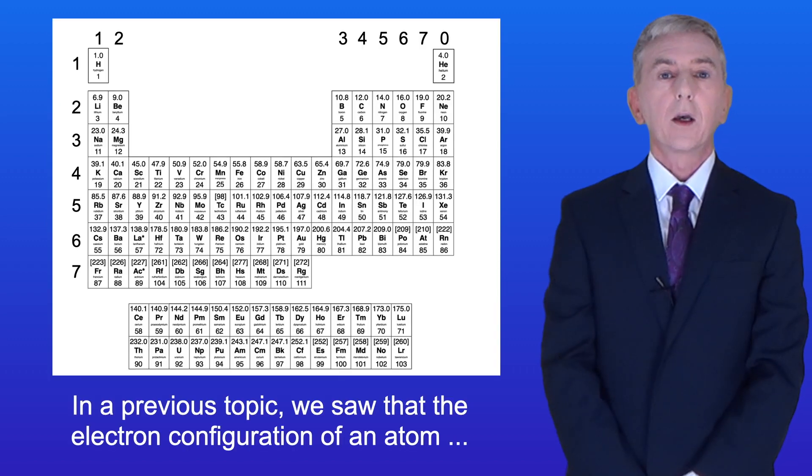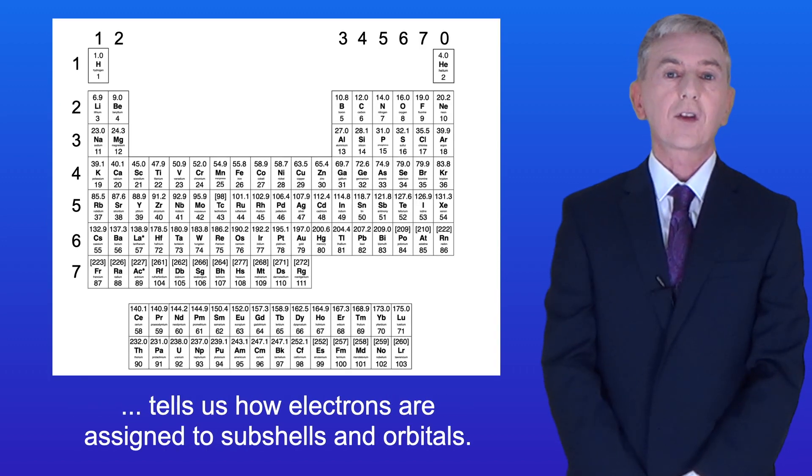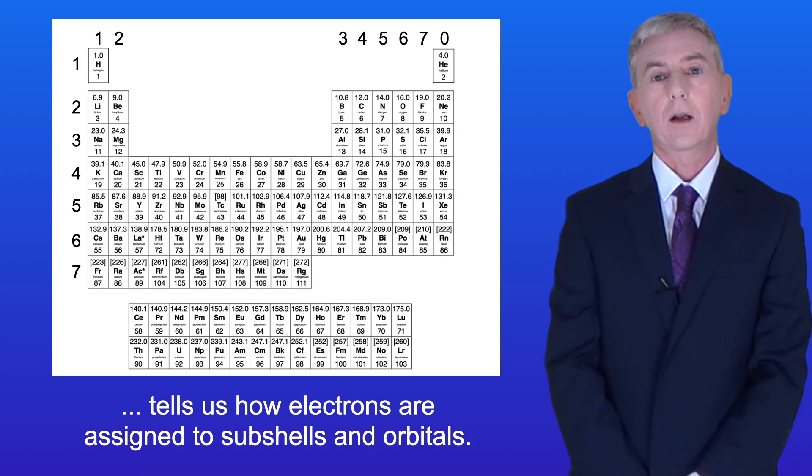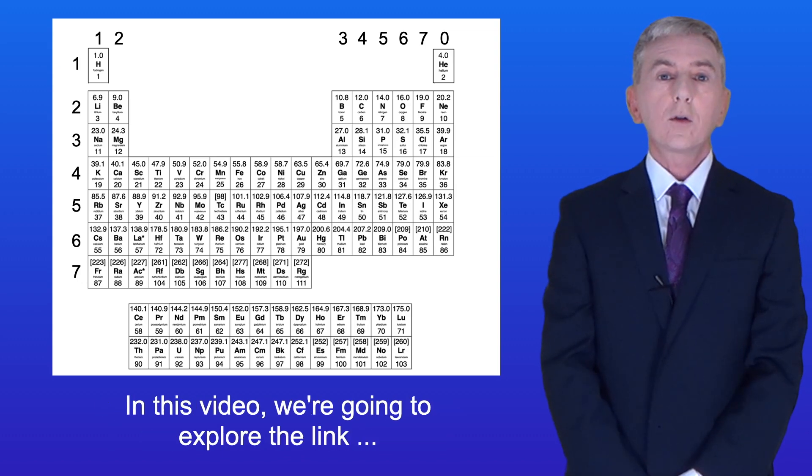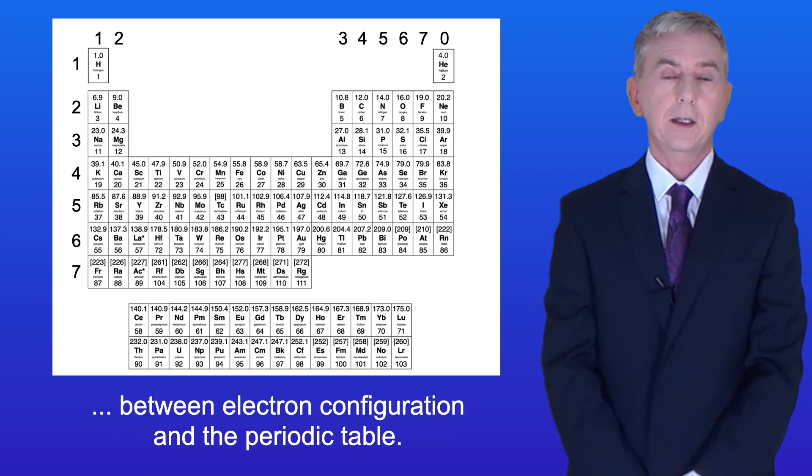In a previous topic we saw that the electron configuration of an atom tells us how electrons are assigned to subshells and orbitals, and if you haven't seen those videos then you need to watch them. In this video we're going to explore the link between electron configuration and the periodic table.